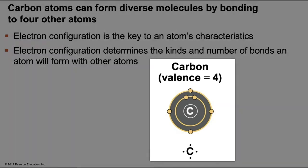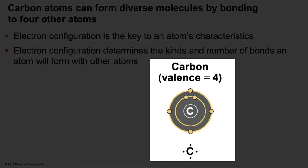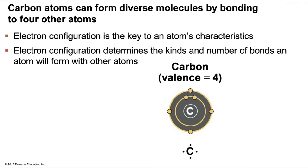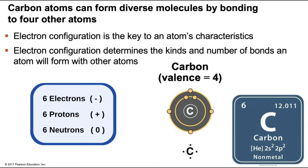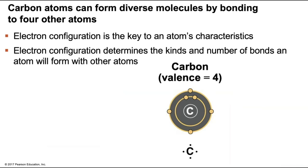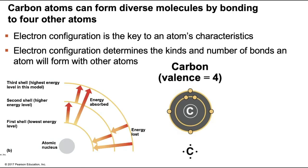Let's do a quick review of carbon. This is called an electron distribution diagram — it depicts the electron configuration of carbon. Carbon's atomic number is six, meaning it has six protons. Its mass number is 12, meaning it has six neutrons in addition to six protons. To create a neutrally charged atom, if it has six positively charged protons, it will need six negatively charged electrons. The first energy shell is filled with two electrons and the second shell is filled with eight. Carbon has a total of six, so two are in the first energy shell and the remaining four are in the second energy shell.